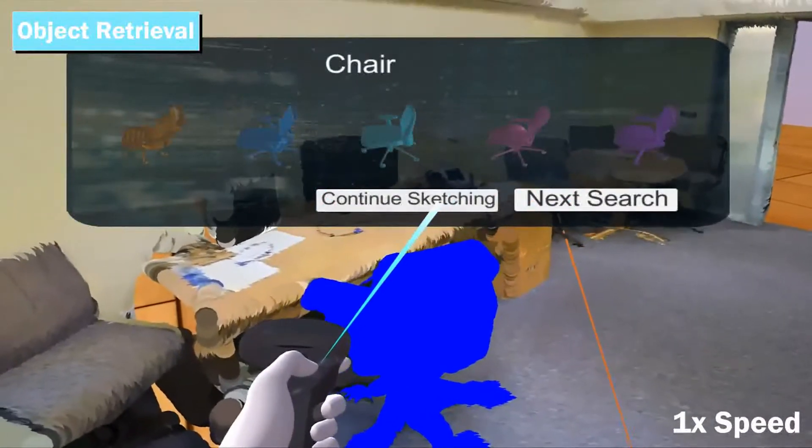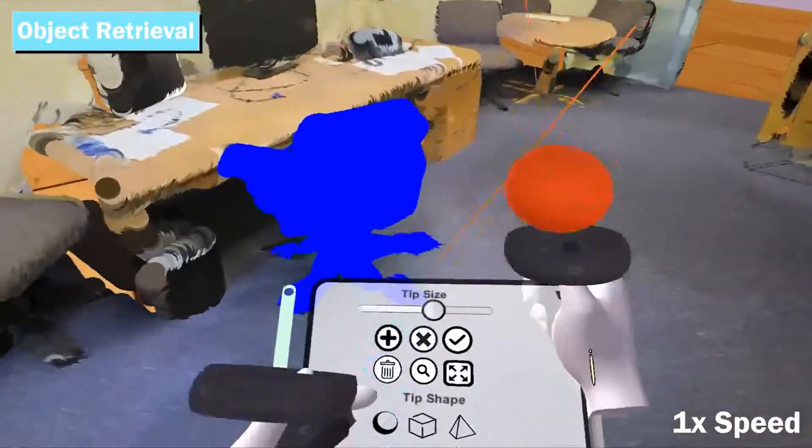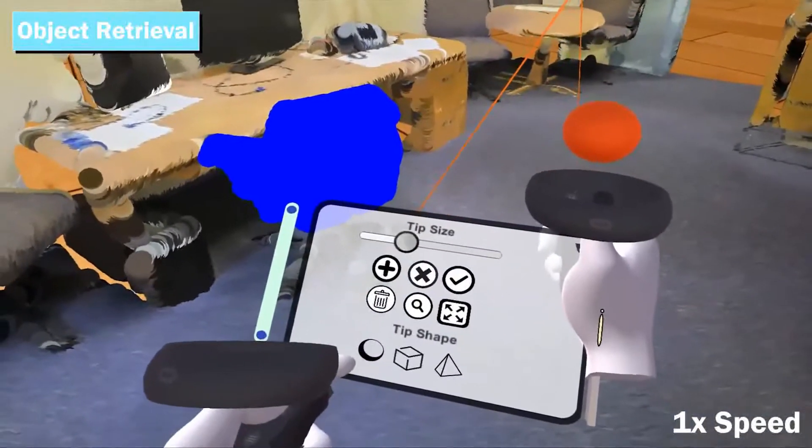Object retrieval is performed as a two-step process: object classification followed by a similarity check. Based on the classification results, the top five possibilities for object classes are shown to the users.